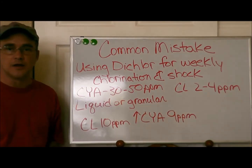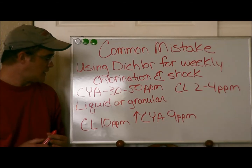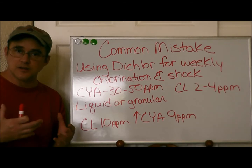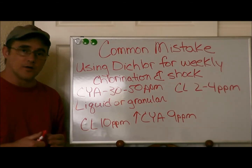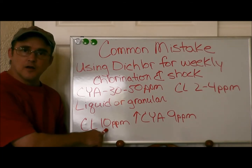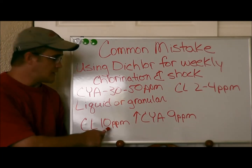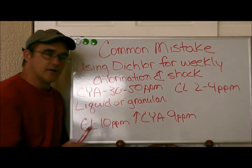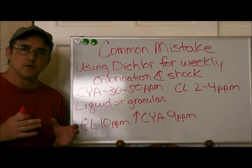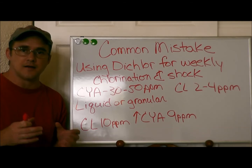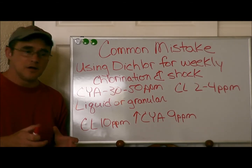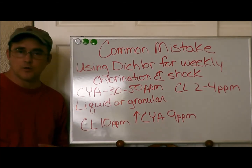Your chlorine level should be 2 to 4 parts per million. When you use dichlor on a regular basis, especially if you're shocking your pool with it, for every 10 parts per million of chlorine you add using dichlor, you increase your cyanuric acid by 9 parts per million. So you can see that your stabilizer is going to get out of hand very, very quickly.